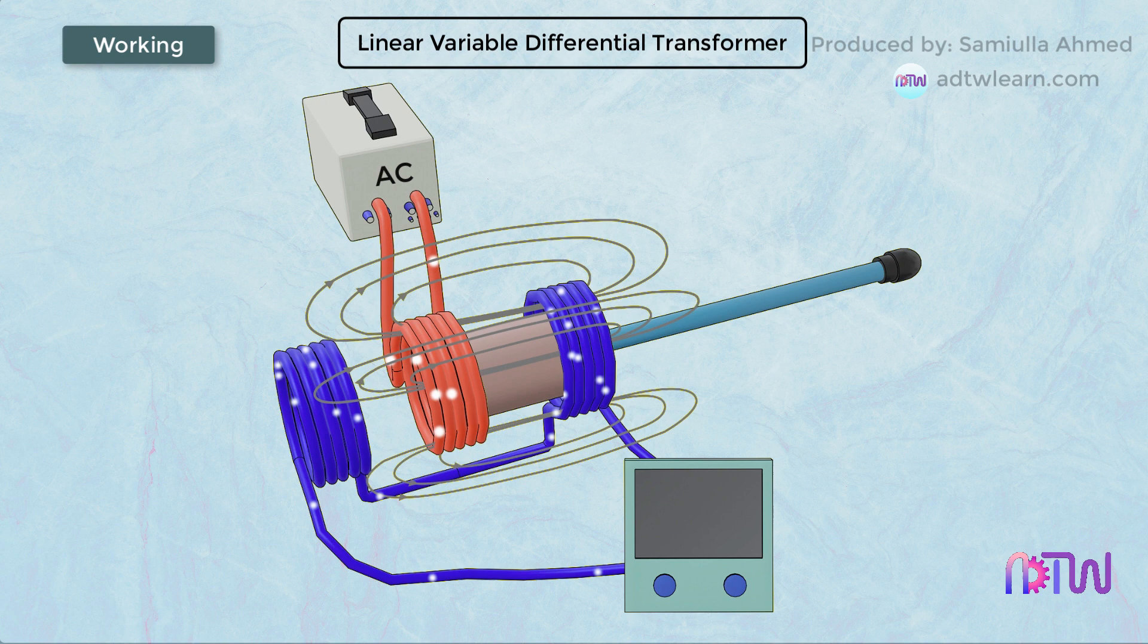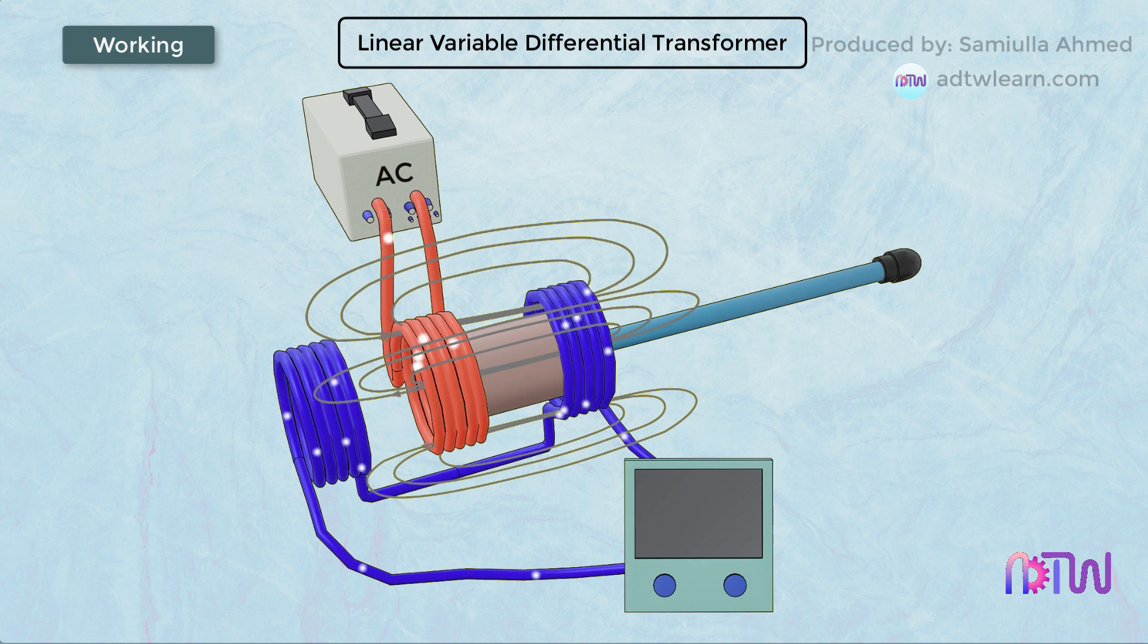Thus we can conclude that the amount of EMF induced in the pair of secondary windings is proportional to the displacement of the movable iron core. This output voltage can be measured to determine the relative position or displacement of the iron core. The output voltage is a linear function of the core displacement.